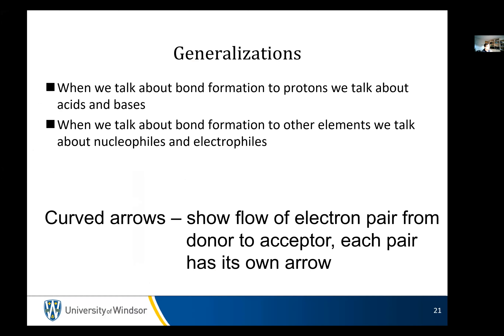Generally, we're going to define the difference between electrophile and acid, and nucleophile and base. When we talk about bond formation to protons, we're discussing acids and bases. When we talk about bond formation to any other element, we talk about nucleophiles and electrophiles. This is a convenience because acid-base reactions and electrophile-nucleophile reactions are almost always in competition with one another, so we use nomenclature that keeps things clear. We use curved arrows that show the flow of electrons from the electron pair to the nucleus.